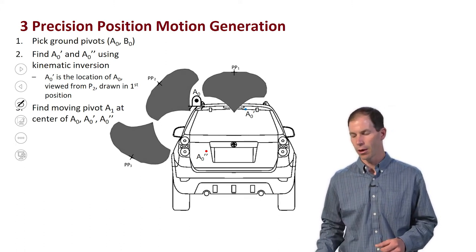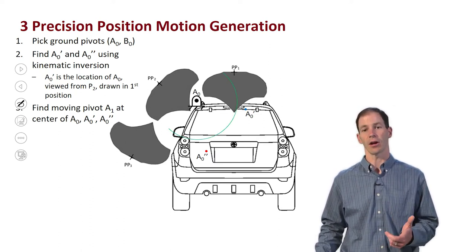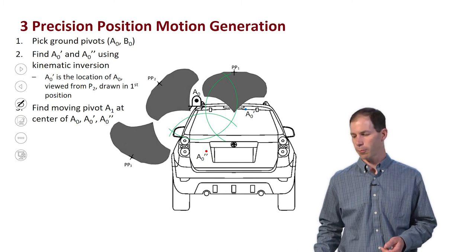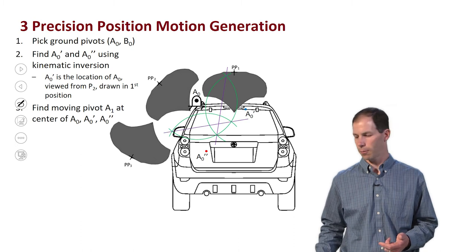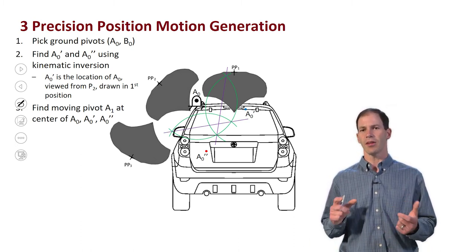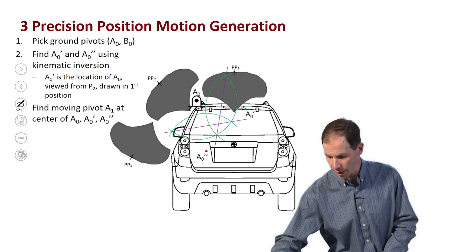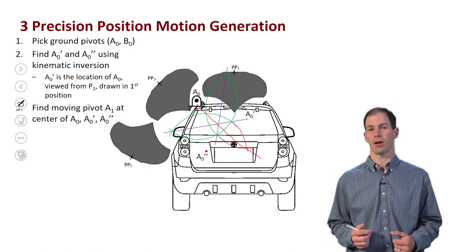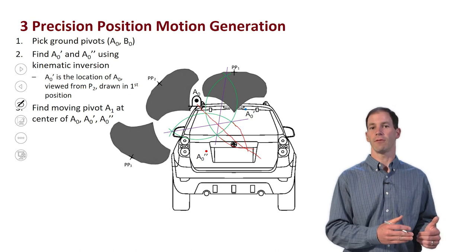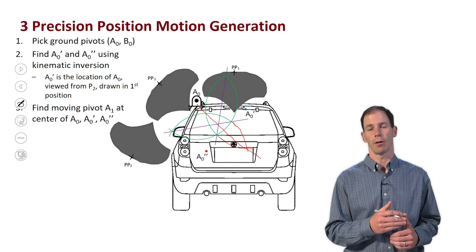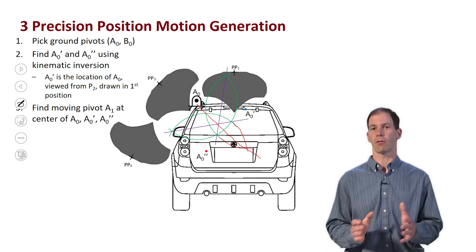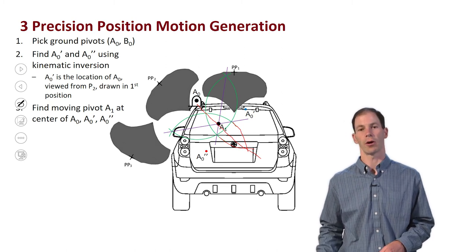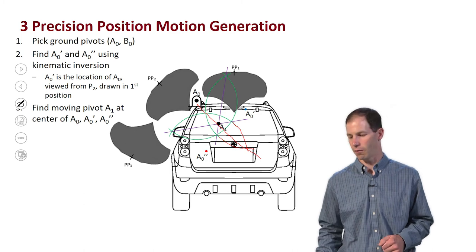To find this center I use perpendicular bisector construction. I swing an arc from A-knot, then from A-knot prime, then from A-knot double prime, and construct perpendicular bisectors — the first bisects A-knot and A-knot prime, the second bisects A-knot and A-knot double prime. I'd encourage you to always go back to the first position, meaning A-knot to A-knot prime and A-knot to A-knot double prime, because when we get to analytical synthesis we always reference back to the first position. The intersection of those bisectors gives me the location I'll call A1, the moving pivot for the input or A side of the mechanism.